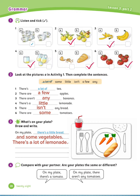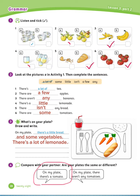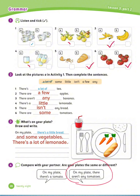There is a lot of lemonade. Exercise number 4: Compare with your partner. Are your plates the same or different? Let's read the examples: On my plate, there is a tomato. On my plate, there aren't any tomatoes.